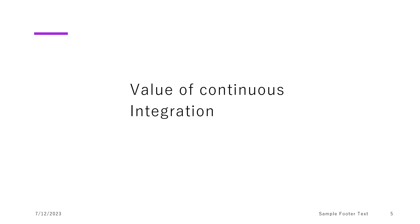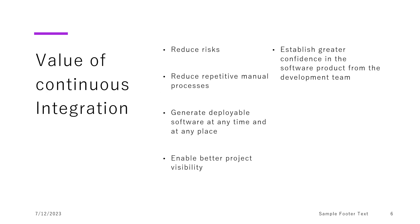Now we looked at what CI is and how to go about it — but let's talk about the value. Why are we even thinking about continuous integration? Why did this concept originate? There are typically five or six salient features that come out when we talk about the value of continuous integration: reducing risk, reducing repetitive manual processes, generating deployable software at any time and place, enabling better project visibility, and establishing greater confidence in the product we are building.